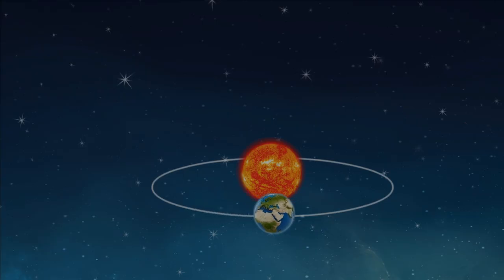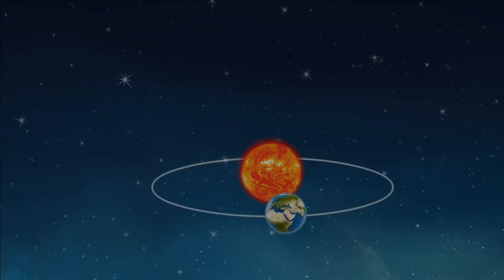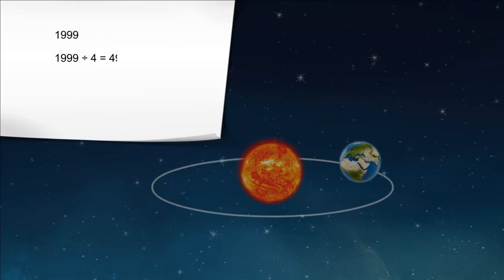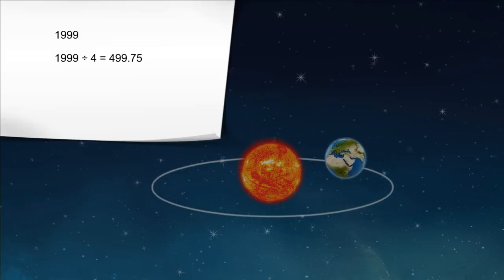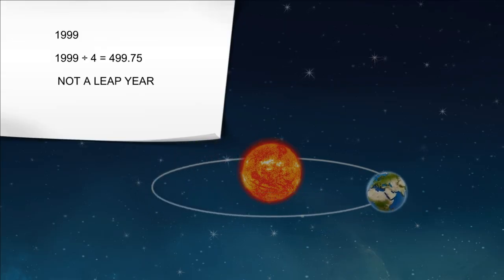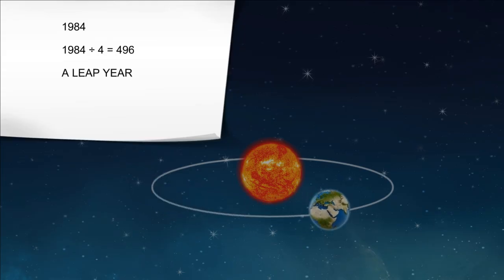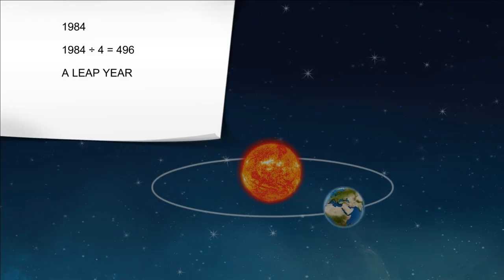Find out from your teacher about the next leap year. How can you identify whether a year is a leap year or not? Let's see some examples. The year 1999 — if we divide 1999 by four, the result is 499.75. It is not completely divisible by four; therefore, it is not a leap year. The year 1984 — if we divide 1984 by four, the result is 496. It is completely divisible by four, which means that 1984 was a leap year.